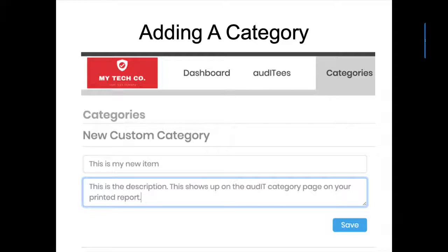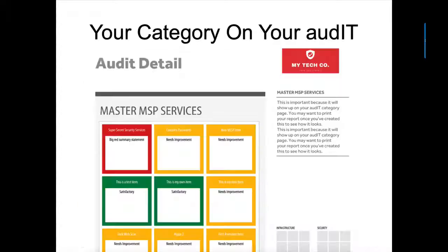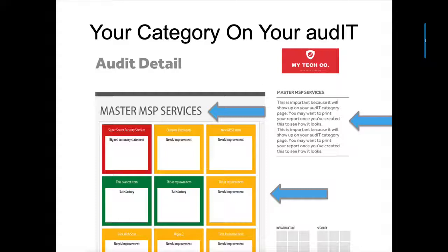Once you click 'new category,' you'll have the ability to add a title — the name of your category — and a description. The first area is your title, the second is your description. Hit the save button and you're good to go. For example, I created a custom category called 'Master MSP Services,' added a description so it shows up on the right-hand side of your printed audit, and then added a bunch of audit items to it.